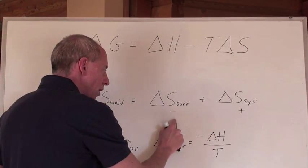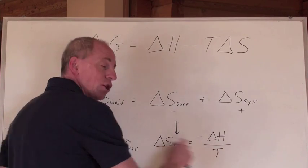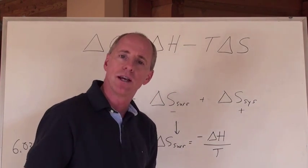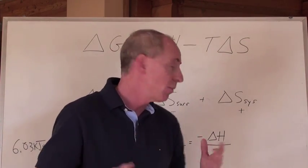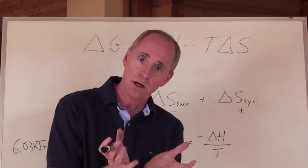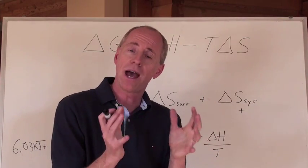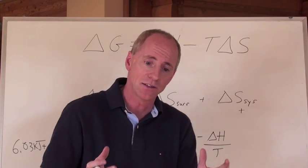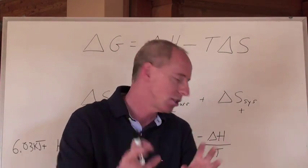The delta S surrounding really is quite equal to the negative of the delta H of the reaction over the temperature. Delta S surroundings is determined by heat flow. The delta S system by what's happening to those particles. You can actually just get the delta H for that system.